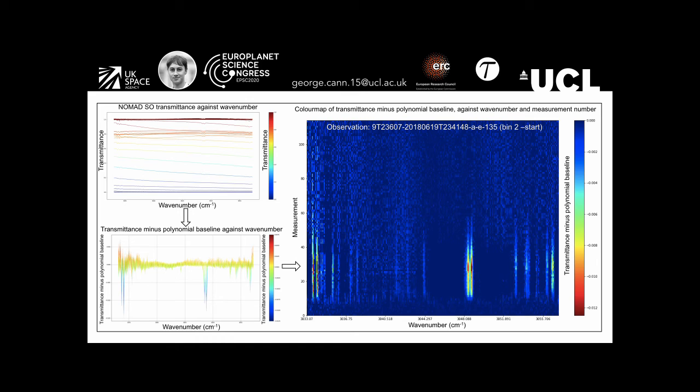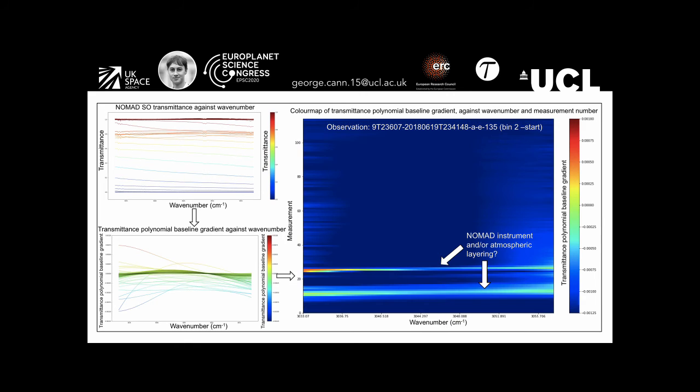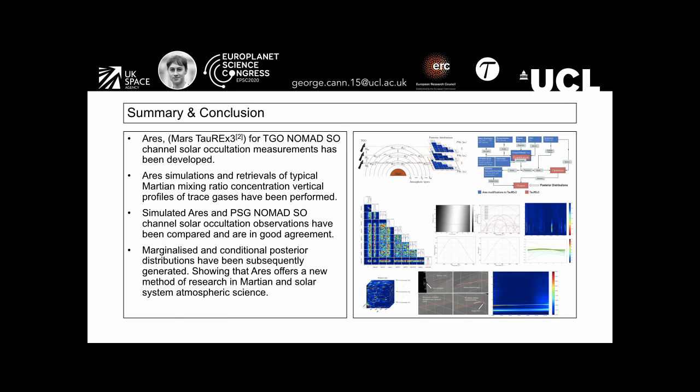This is the representation shown in the bottom left. This representation can then be converted to a color map of transmittance minus polynomial baseline against wavenumber and measurement number. Here you can clearly see absorption features at 3048 wavenumber. The second representation is of the transmittance polynomial baseline gradient against wavenumber. This is the graph on the bottom left. This can then be represented in the diagram on the right as a color map of the transmittance polynomial baseline gradient against wavenumber and measurement number. This could highlight NOMAD instrument effects and or atmospheric layering.